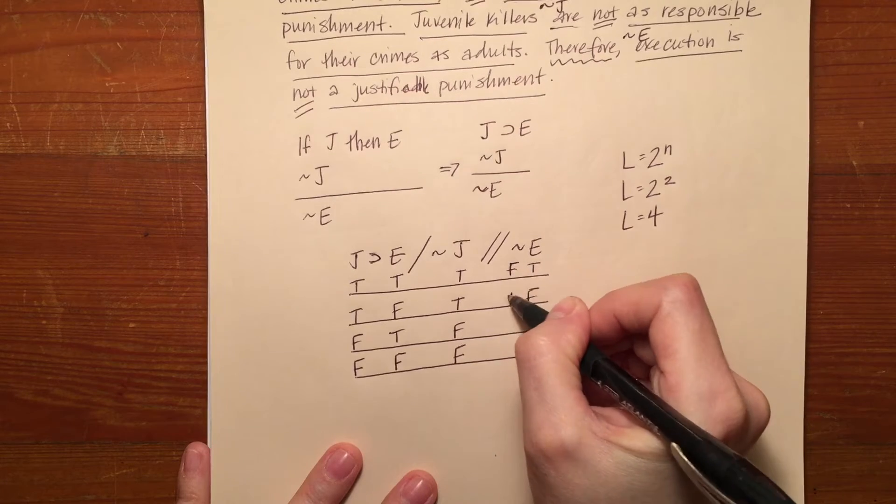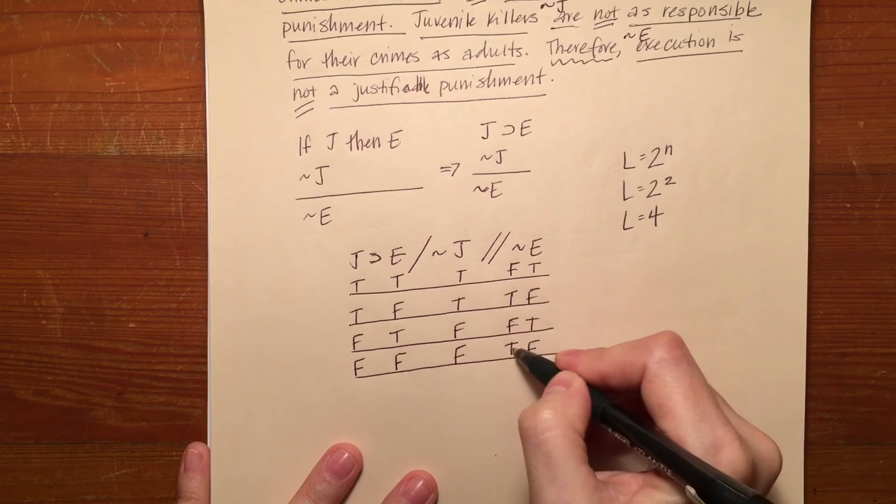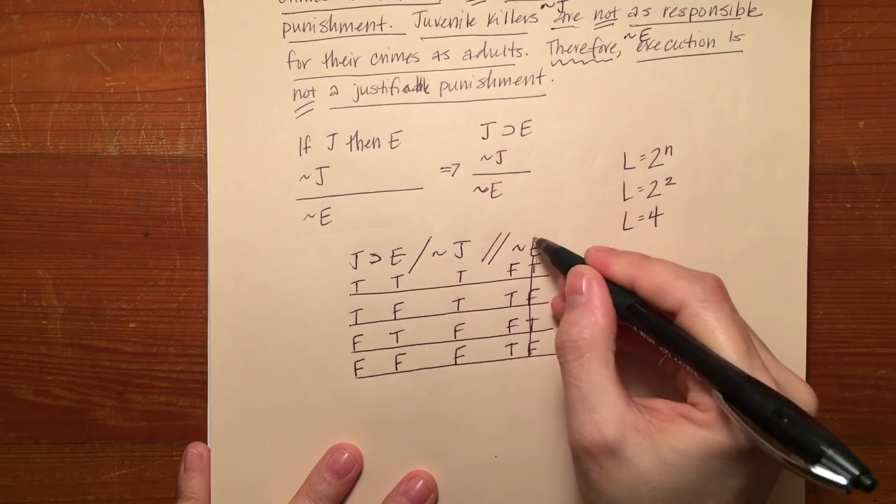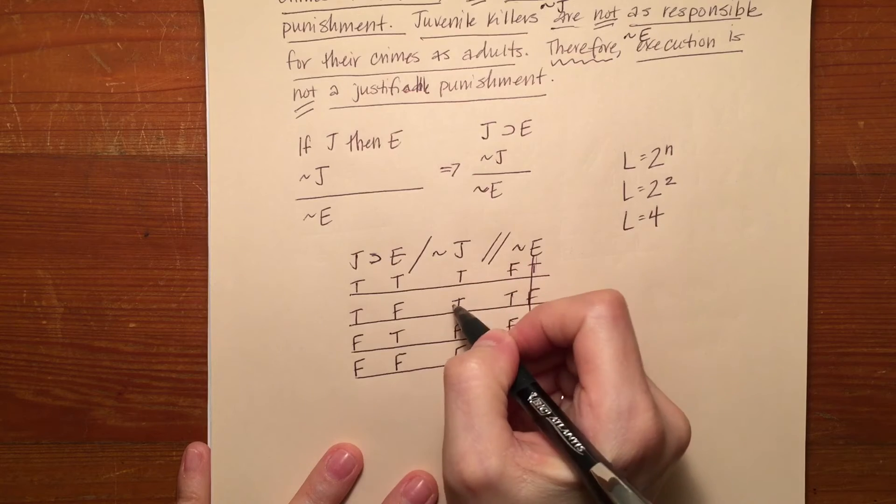So I want not E. So I want false, true, false, true, making it the opposite of E. Now I'm done with my E column. I've got my tilde E and I can move on. I'm going to do the same thing with not J. The tilde makes it the opposite.